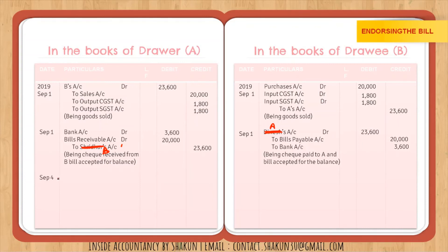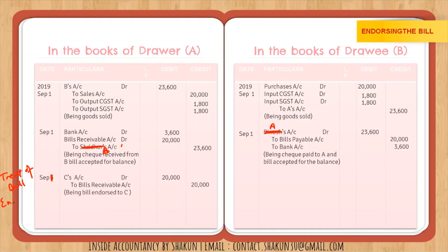A endorses the bill to C. Entry in books of A: C's account Dr to Bills Receivable — 20,000. C is the receiver (debit the receiver), the bill goes out (credit bills receivable). This is the journal entry for treatment of the bill by endorsement. There is no entry in the books of B (drawee) on this date.